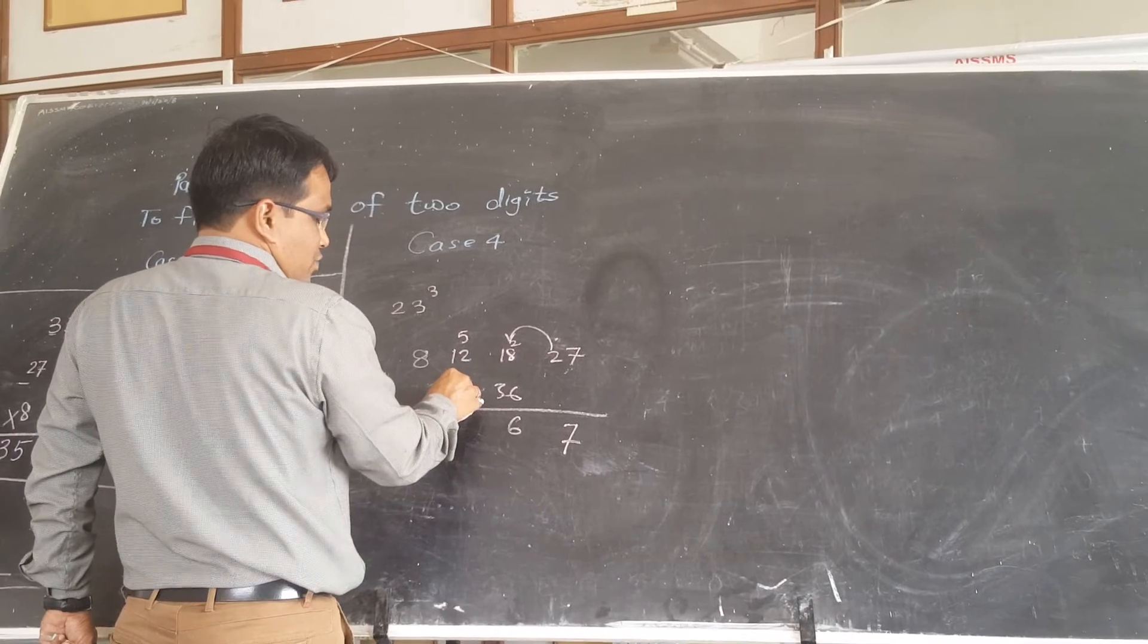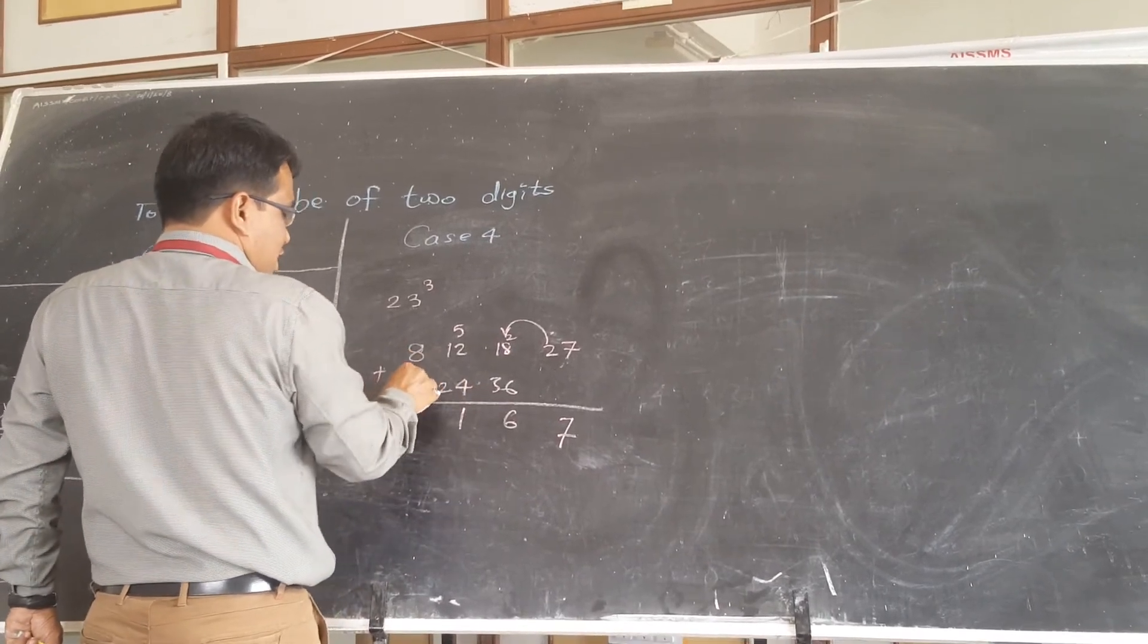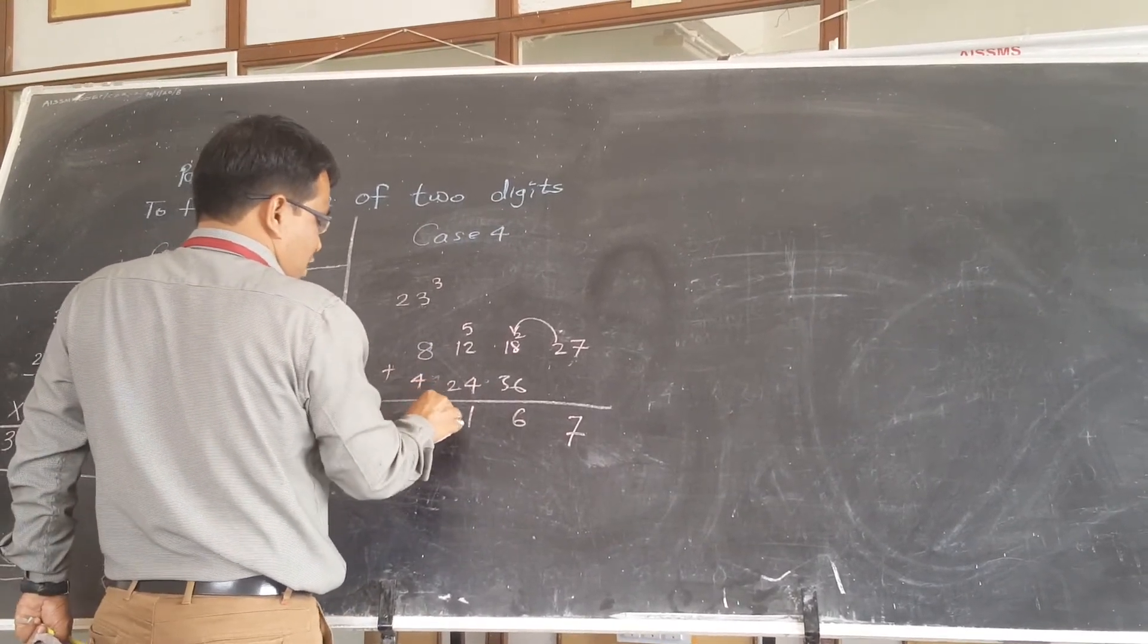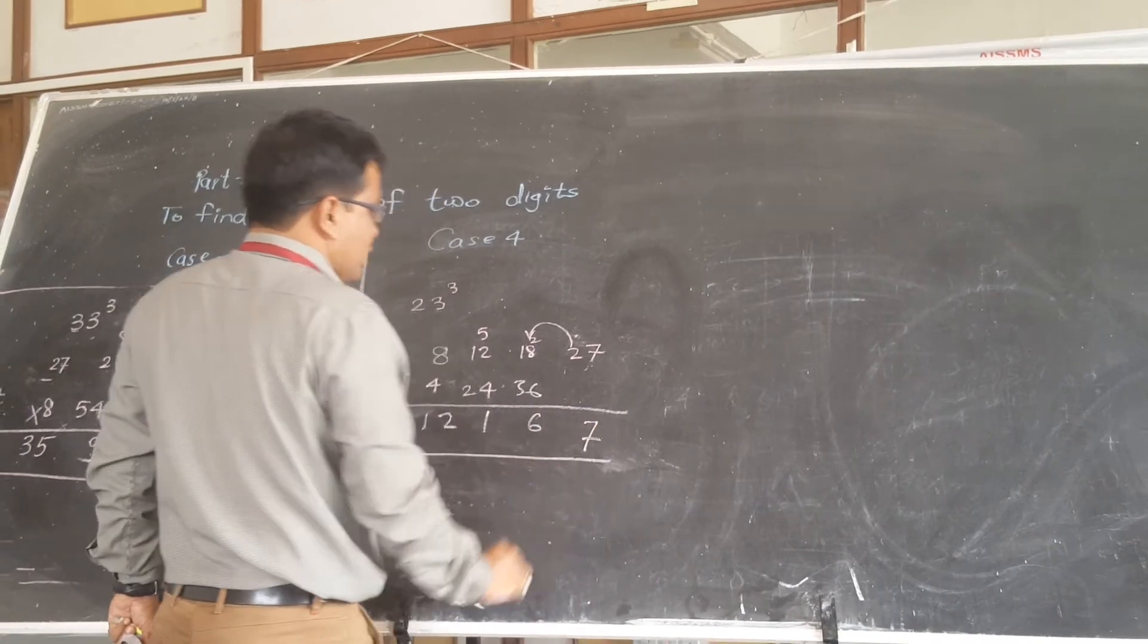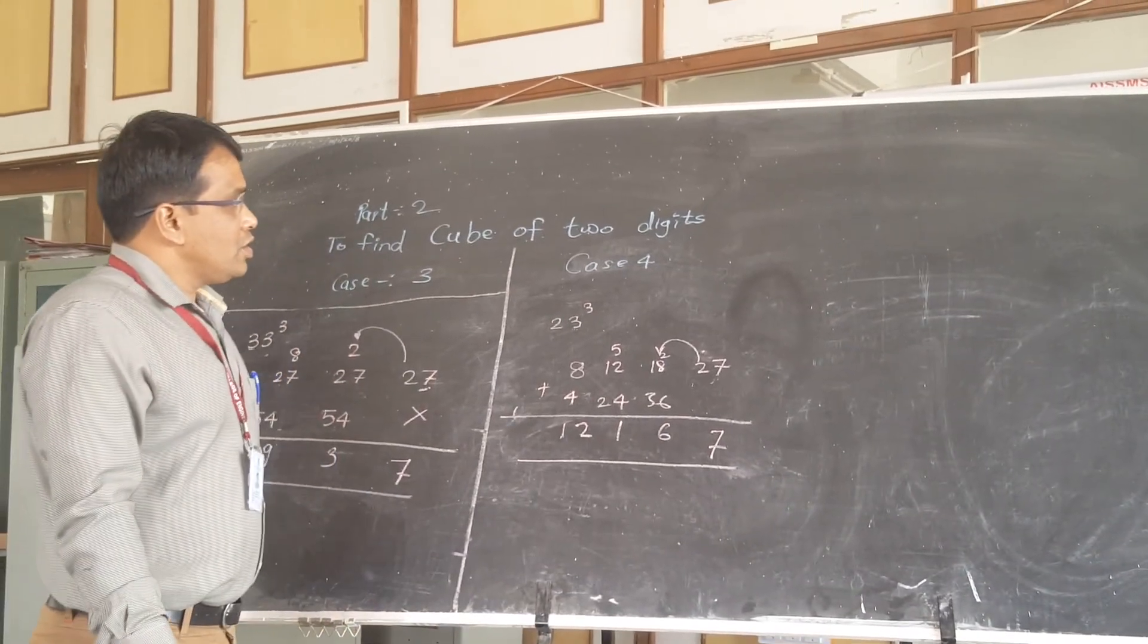17 plus 24, 41, carry 4. 8 plus 4, 12. So this way you can find out the cube of a 2 digit number.